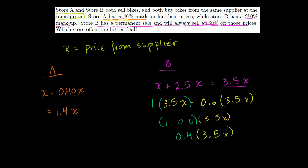And let's multiply that out. So if we take 3.5 times 0.4. 4 times 5 is 20. 4 times 3 is 12 plus 2 is 14. And we have two numbers behind the decimal spot. So they're going to sell it at 1.4x. So in either store, you're actually going to pay the same price. Let's say they buy the bikes from the supplier at $100. Then in store A, you're going to pay $140 for that bike. And in store B, you're going to spend $140 for that bike. But in store B, you think you're getting 60% off.